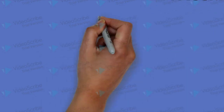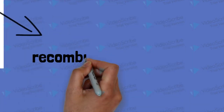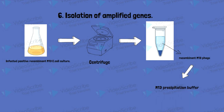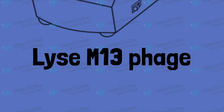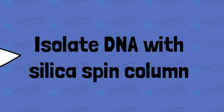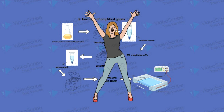The final step is to isolate the amplified gene from the positive recombinant. First, grow the infected positive recombinant M13 E. coli culture, then centrifuge the bacterial culture. The supernatant containing the recombinant M13 phage is incubated with M13 precipitation buffer to precipitate the M13 phage, then centrifuged again to lyse it. The supernatant is centrifuged once more before isolating the DNA with a silica spin column. Finally, gel electrophoresis of the extracted DNA is carried out to isolate the gene of interest at a specific band, yielding the amplified genes.